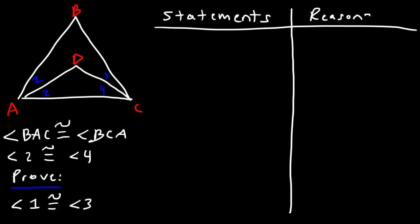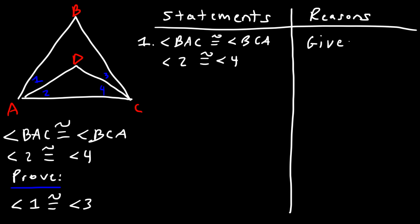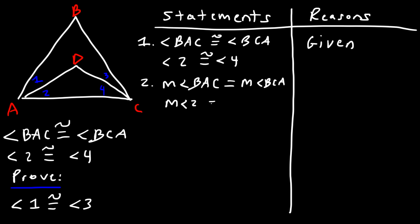The first thing we should write is what we're given: angle BAC is congruent to angle BCA, and angle two is congruent to angle four — that's given. Next, we can write that the measure of angle BAC equals the measure of angle BCA, and the measure of angle two equals the measure of angle four. The reason for this is the definition of congruent angles.